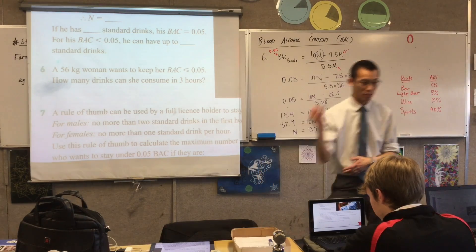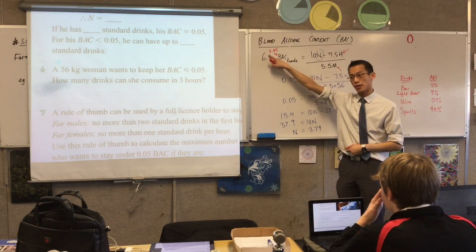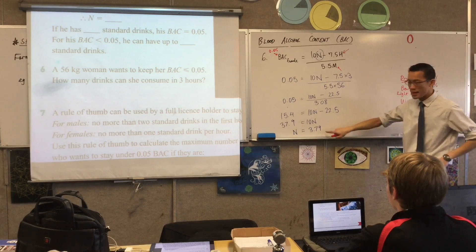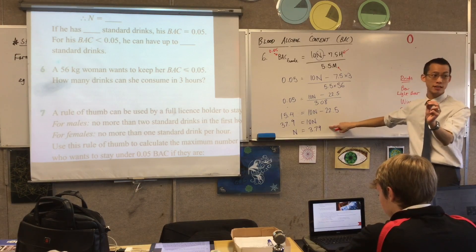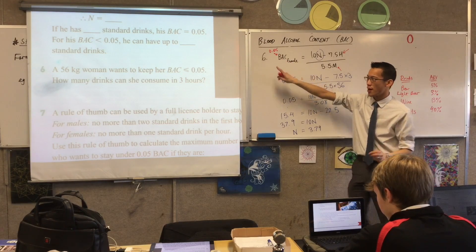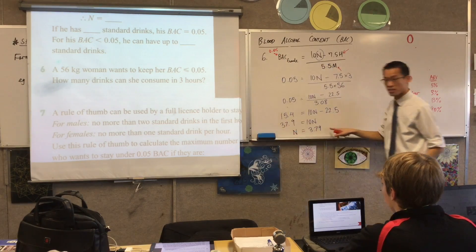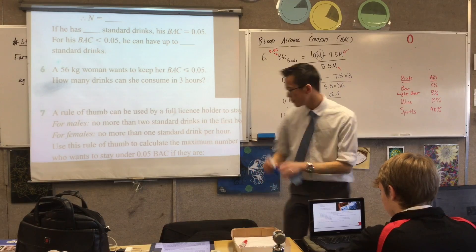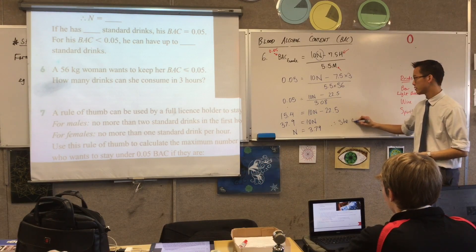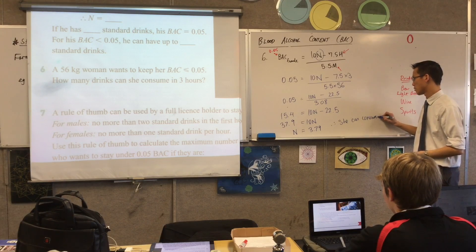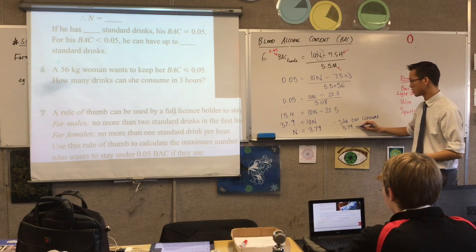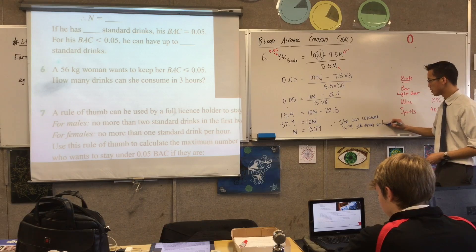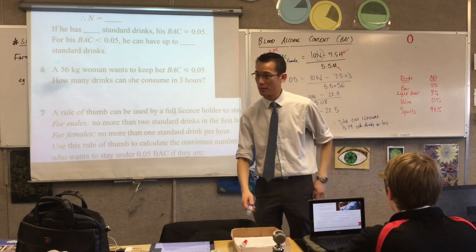Now remember — right at the top when I was substituting, I substituted 0.05 but asked you to remember something. What was it? 0.05 or less. So 3.79 is the exact number of standard drinks that gets to exactly 0.05. How many drinks can she consume in three hours? It's going to be this or less. Therefore, she can consume 3.79 standard drinks or less — or you could say, she can consume a maximum of 3.79 standard drinks.